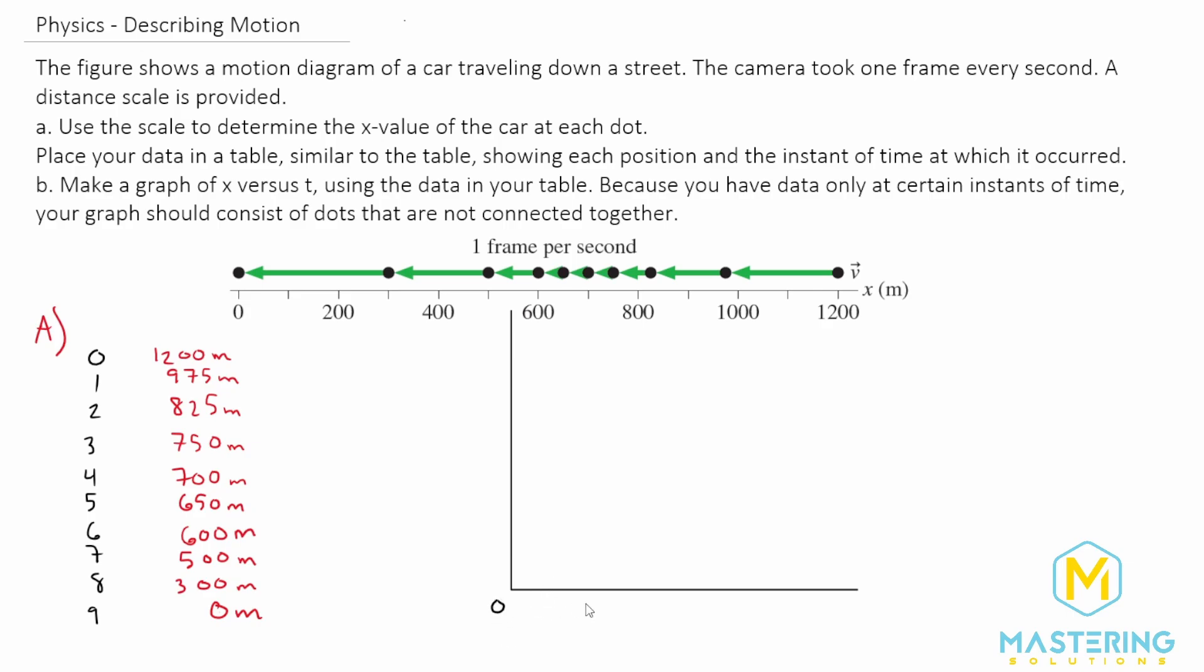All right, so now let's go ahead and label this as zero right here. Down here on the x-axis, that is time, of course, in seconds. The y-axis is the x position, and that's in meters. And then we'll say 300, 600, 900, and 1200.